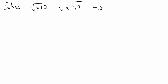Here's a somewhat more complicated example of solving radical equations. We have two radicals, which is what makes it more complicated: the square root of x plus 2 minus the square root of x plus 10 equals negative 2. Remember, in previous examples we said the first thing we want to do is isolate the term with the radical. With two radicals, we isolate whichever one we want, then square both sides. That will leave a more complicated expression with only one radical.